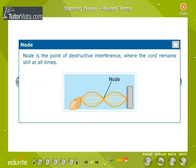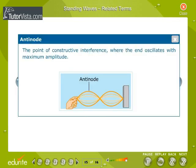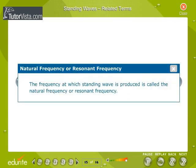Node is the point of destructive interference where the chord remains still at all times. Antinode is the point of constructive interference where the end oscillates with maximum amplitude. The frequency at which standing wave is produced is called natural frequency or resonant frequency.